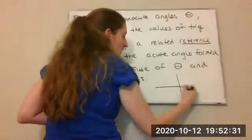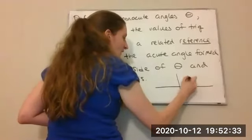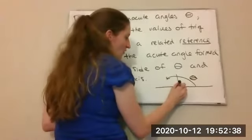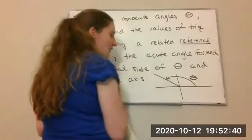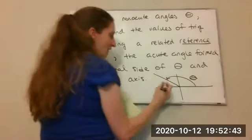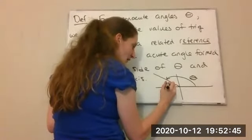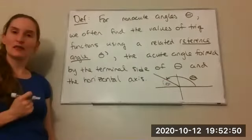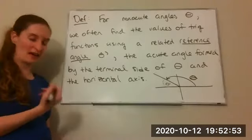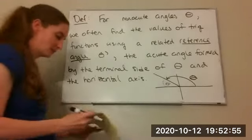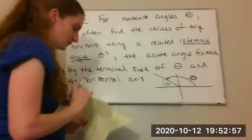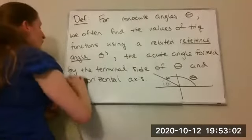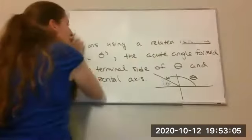So if this is my angle theta that's not acute, here's the terminal side of my angle theta. My theta prime — the reference angle — is this little acute angle formed between that terminal side and that horizontal axis. Let's do an example of finding some reference angles before we learn how to use them to calculate trig functions.